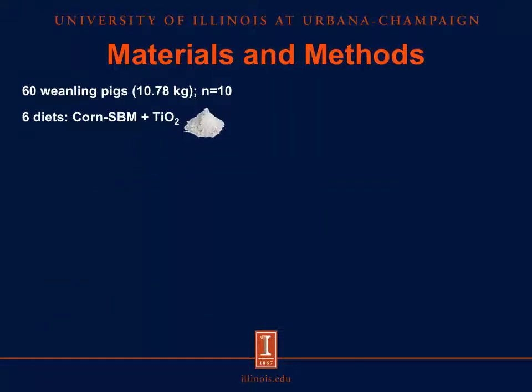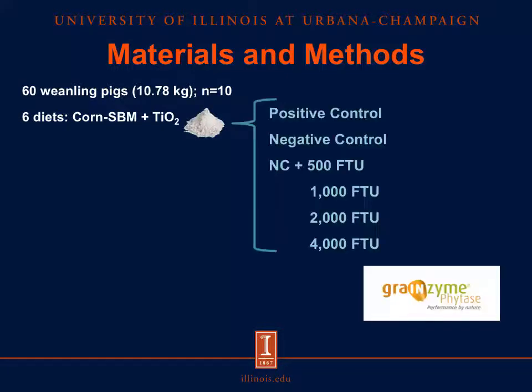To carry out this trial, we used a total of 60 weanling pigs with an initial average body weight of 10.78 kg. Pigs were randomly distributed to 6 dietary treatments, so we have 10 pigs per treatment. The diets were based on corn and soybean meal and contained titanium dioxide as an indigestible marker. The six dietary treatments were the positive control diet, the negative control diet, and the negative control plus 500, 1,000, 2,000, and 4,000 FTU of grain enzyme.